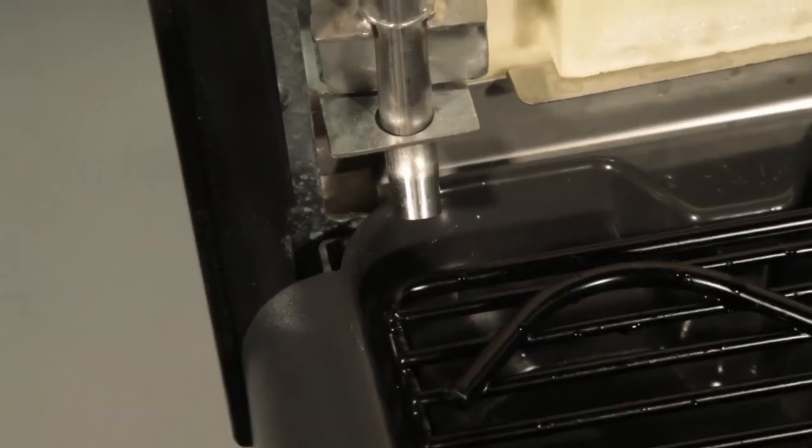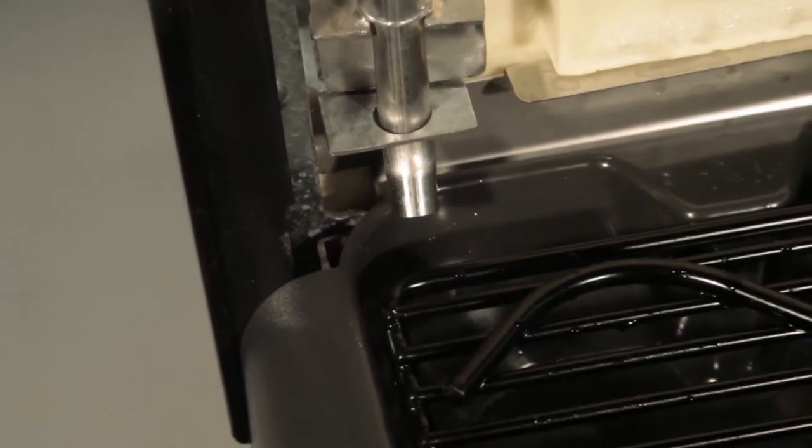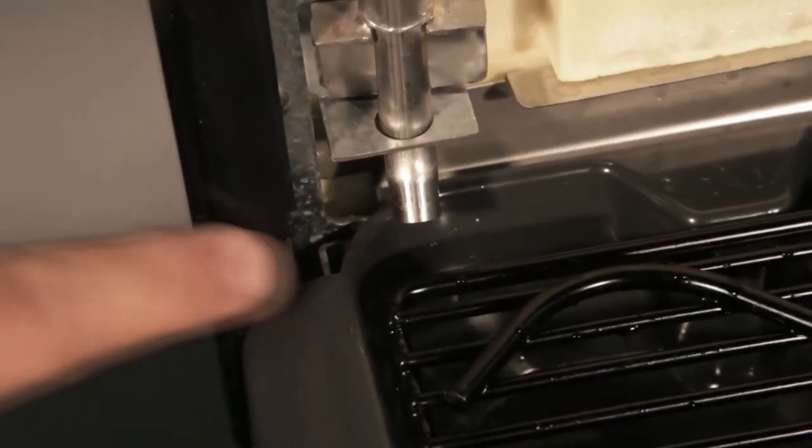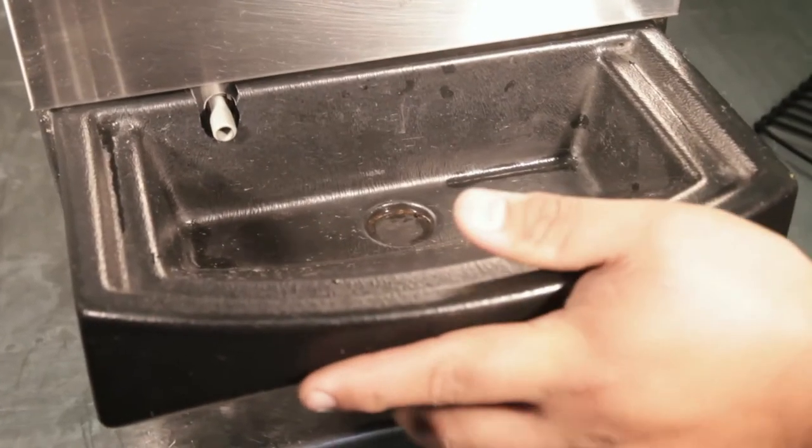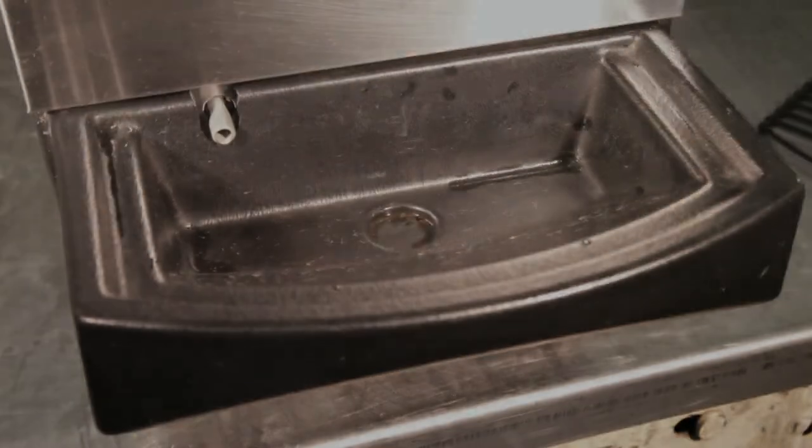In either case, to fix this, when you remove a drip tray for cleaning it should be pushed back firmly into position, making sure that the condensation line is going into the drip tray.